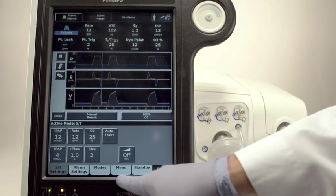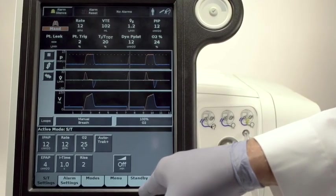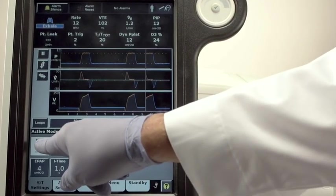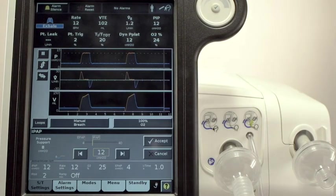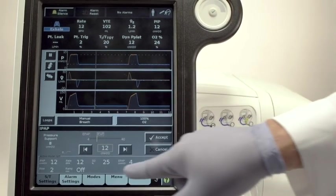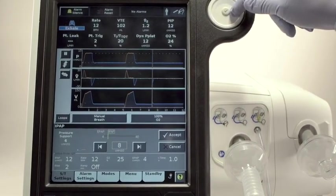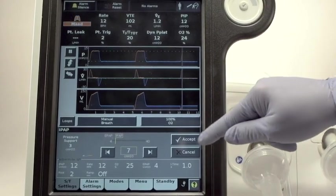Touch the tab displaying the currently active mode and touch the IPAP button to change the inspiratory pressure level. You can change the setting by touching the forward and or backward arrows. You can also use the navigation ring at the top right of the GUI. Real-time setup guidance is provided as you make the proposed changes.